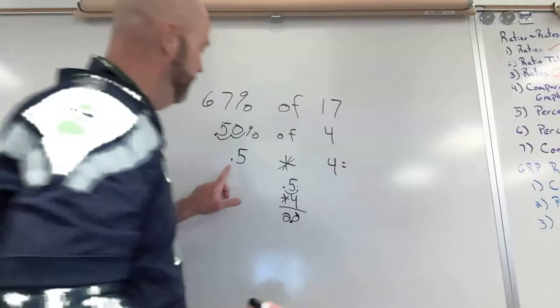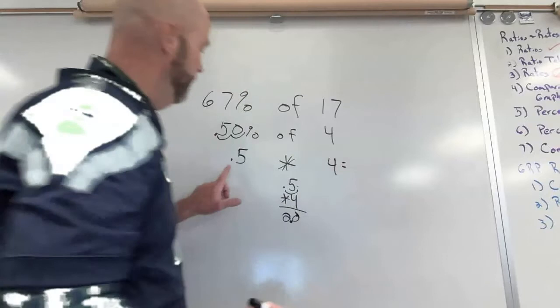I have one place to the right of the decimal here, one place there, so one place there. So it makes sense that 50 percent of four equals two. Just like we have here that checks out.